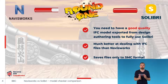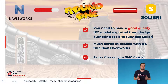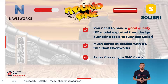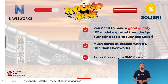It is essential to export a good quality IFC model. If we put a poor IFC model into Solibri, it will be quite challenging to check the BIM model correctly. Solibri is much better at working with IFC files than Navisworks — the loading time is much faster, and working with IFC models in Solibri is smoother and more dynamic.